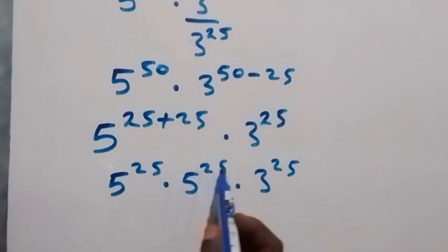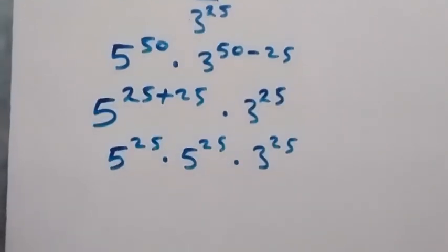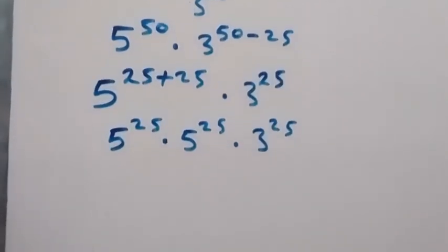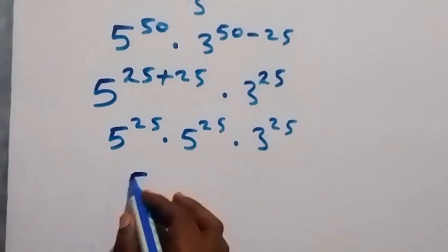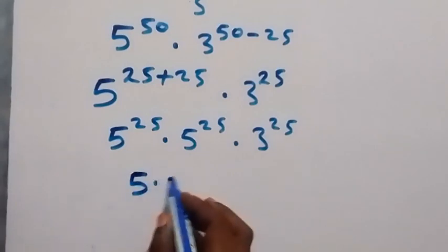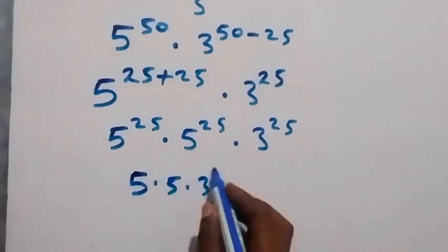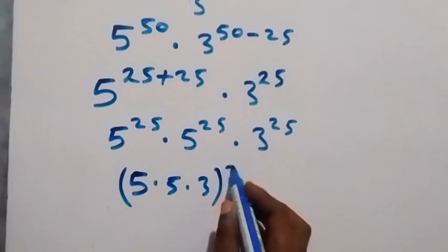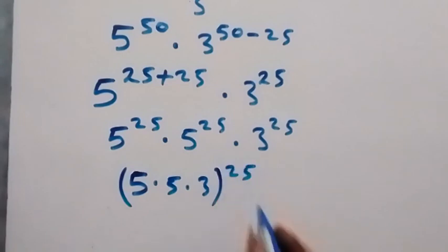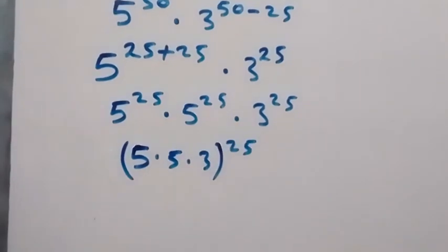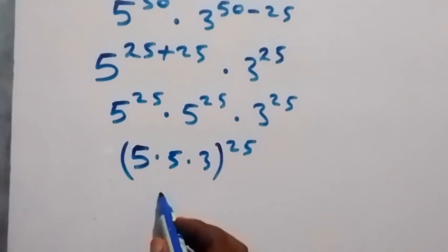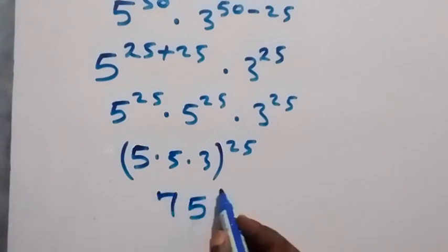Since we have the same power, we can bring the power out and write this as 5 times 5 times 3, then all raised to the power of 25. When we multiply this, we have 75 raised to the power of 25.